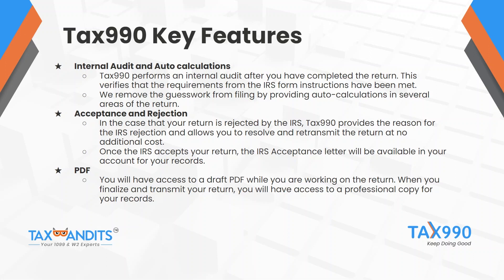In addition to tax preparer-specific features, Tax 990 offers several advanced technology features to assist in the filing process. Tax 990 performs an internal audit after you have completed the return. This verifies that the requirements from the IRS form instructions have been met. The audit helps verify that your calculations are accurate and that necessary schedules are generated. The form will auto-generate many calculations, removing the guesswork from filing — for example, when you input all your different categories of revenue, the total revenue will be calculated accordingly.